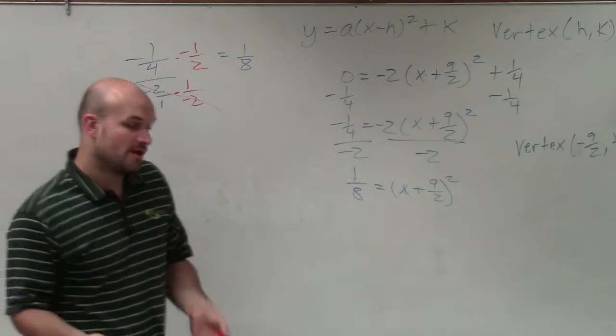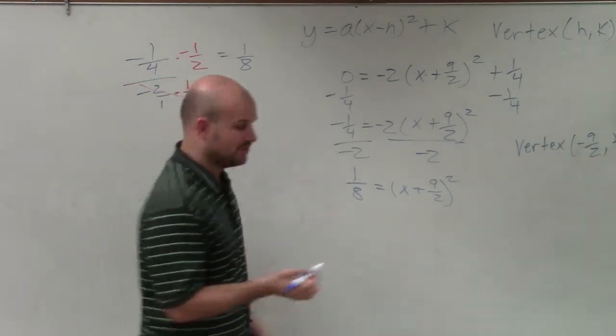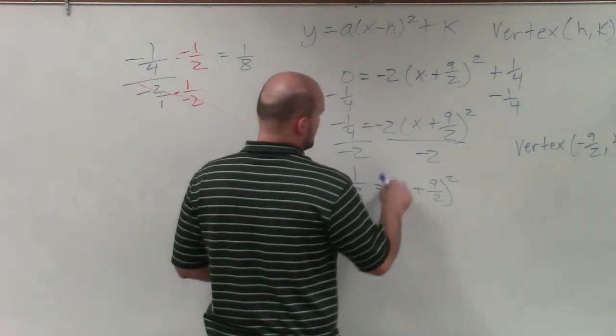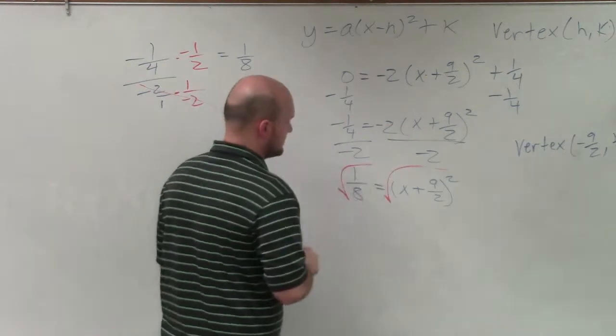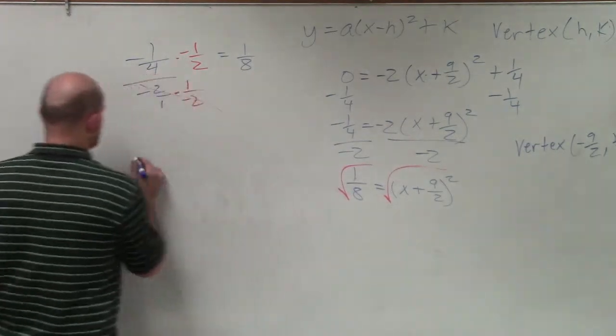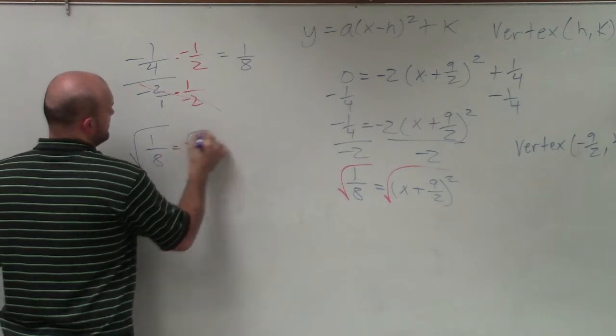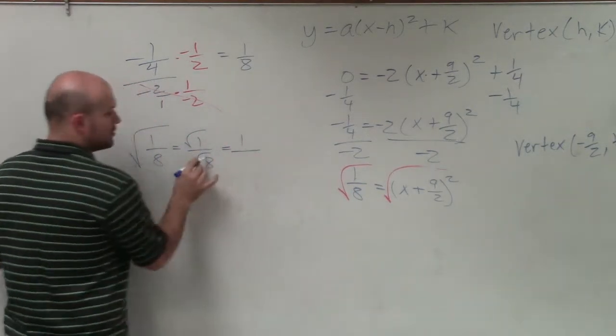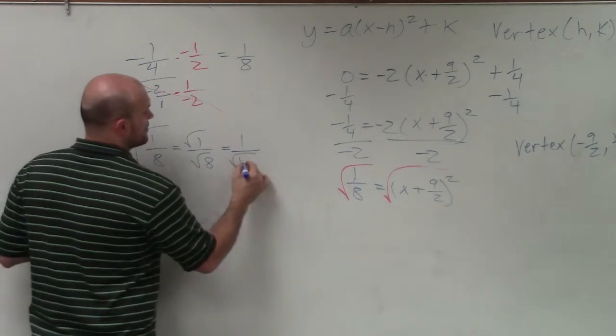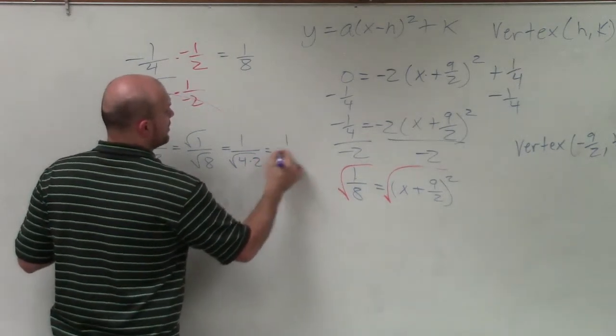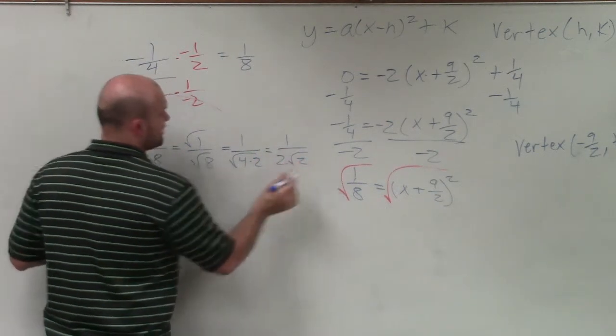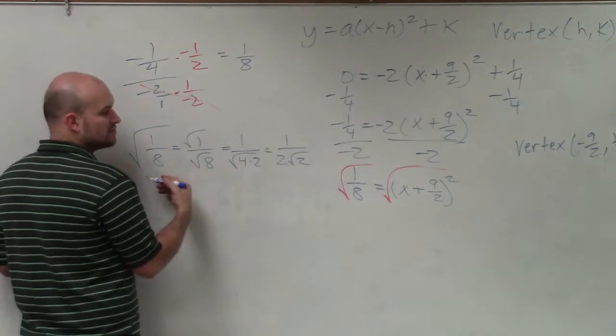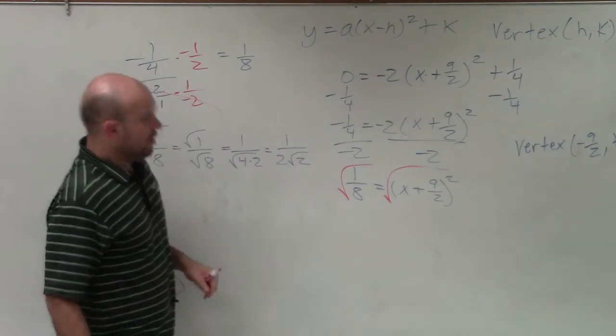Now I need to undo the squaring function, which is going to be to take the square root. So now I introduce the square root of both sides. And remember, when you introduce the square root of a fraction, you can take the square root of the top and the bottom. So that's square root of 1 over the square root of 8. Square root of 1 is just equal to 1. Square root of 8, we can rewrite as the square root of 4 times 2, which is equivalent to 1 over 2 square root of 2, as I took the square root of 4 out, because the square root of 4 is 2.